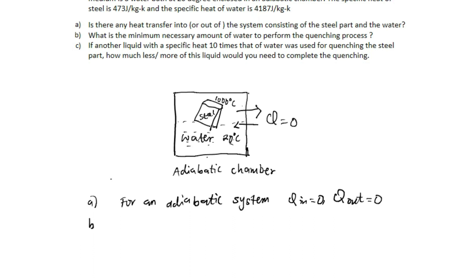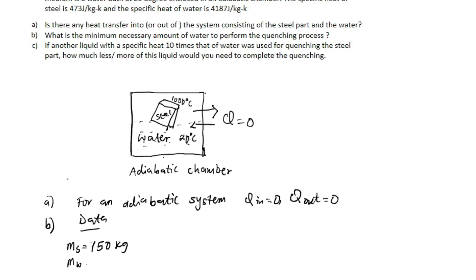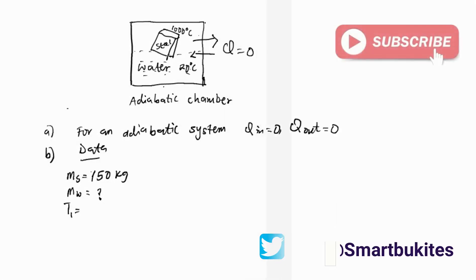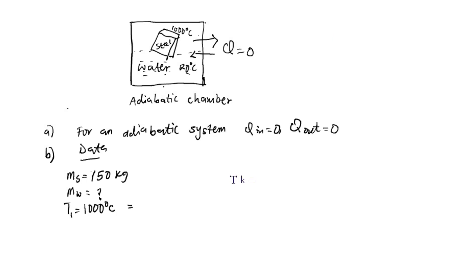Then the second part asks us to find the amount of water necessary to perform the quenching process. From the data we are given, the mass of steel is 150 kg. The temperature of the steel T1 is 1000 degrees, which is equivalent to 1373 Kelvin.